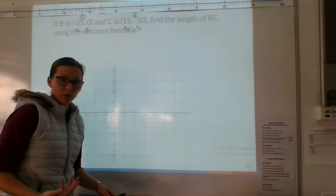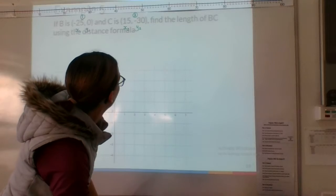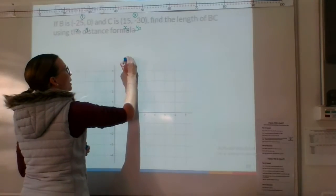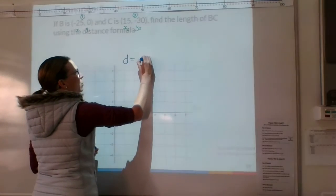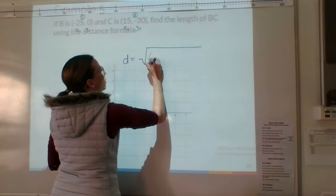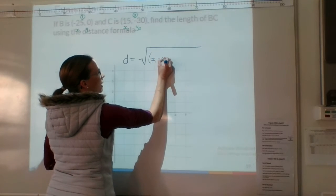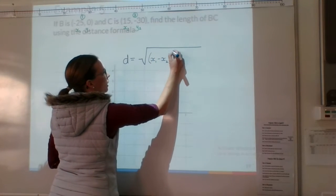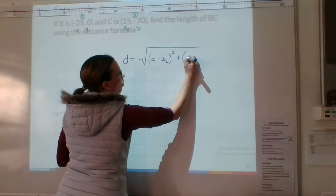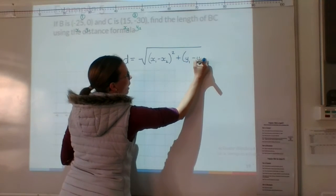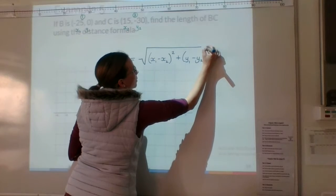So I'm going to work through this one a little quicker. Alright, so the distance formula is equal to the square root of x1 take x2 all squared plus y1 take y2 all squared.